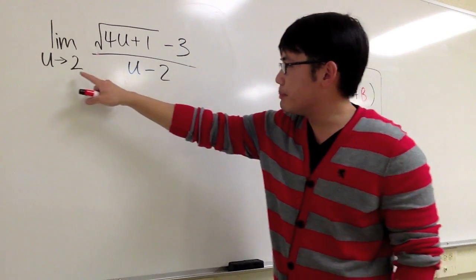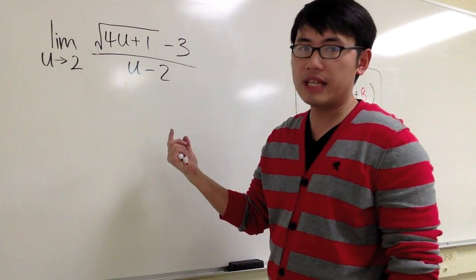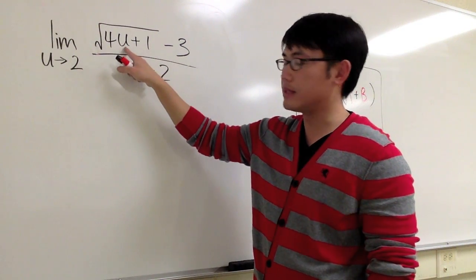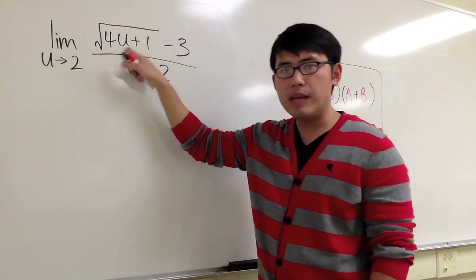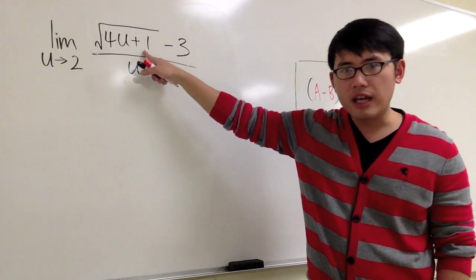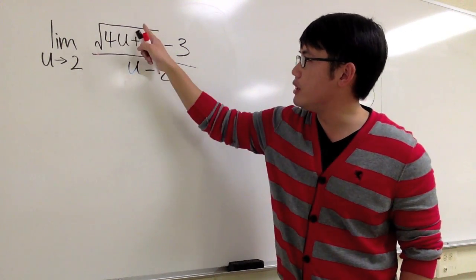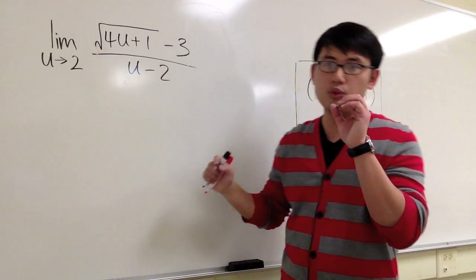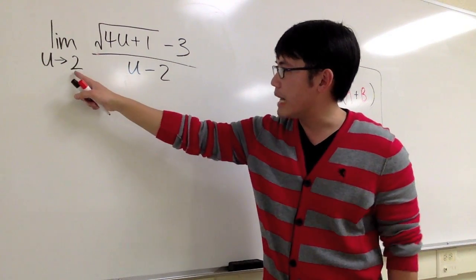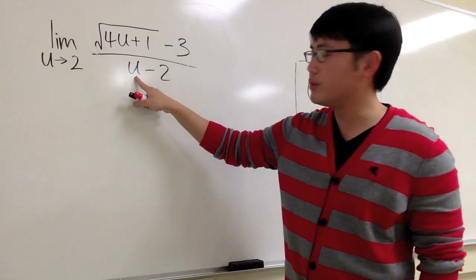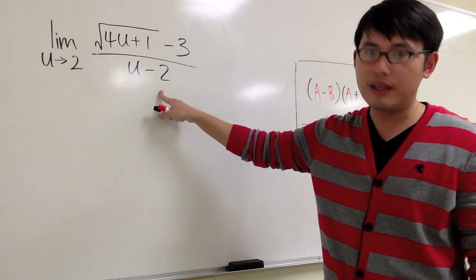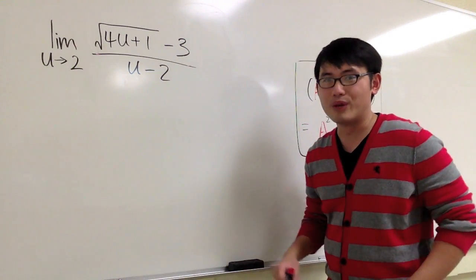Okay, so let's plug in 2 into all the u's to see what we get. If we plug in 2 here, we get 4 times 2, which is 8. 8 plus 1 is 9. 9 inside the square root becomes 3. 3 minus 3 is 0 on the top. On the denominator, plug in 2 into this u, we get 2 minus 2, which is 0 as well. 0 over 0, we have to do more work.